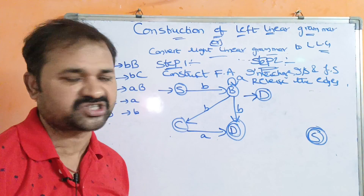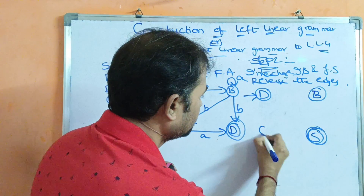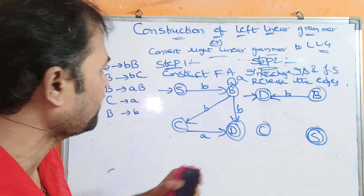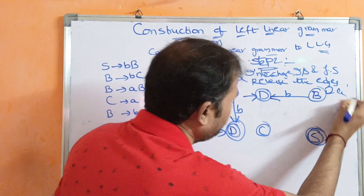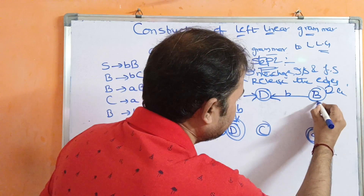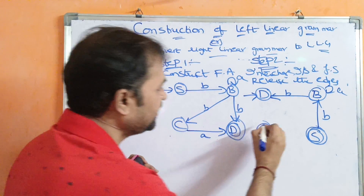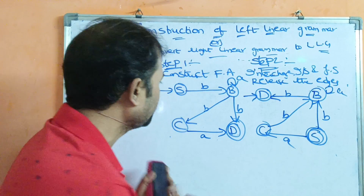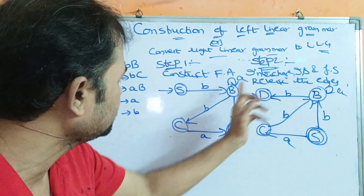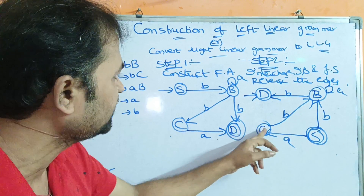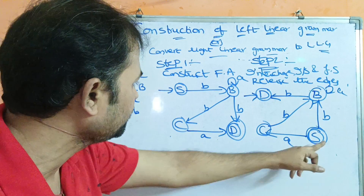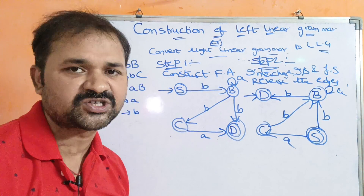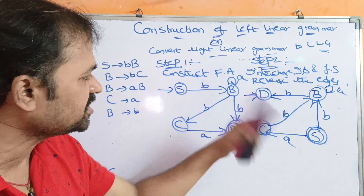Now we reverse the edges. The initial state arrow now points to D. The edge S to B on input B becomes B to S — wait, reversed: B to D on input B. The self-loop on B with input A remains. The edge B to C on input B becomes C to B on input B. The edge C to D on input A becomes S to C on input A. The edge B to D on input B becomes D to B on input B. Step 2 is now complete.